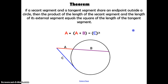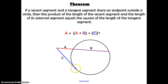The next theorem is similar but deals with a secant and a tangent. If a secant segment and a tangent segment share an endpoint outside a circle, then the product of the secant segment and its external segment equals the square of the tangent segment. For the secant it's the short part on the outside times the whole thing, but it equals the tangent segment squared — since the short part and the whole thing are the same for the tangent. Formula: A times (A plus B) equals C squared.